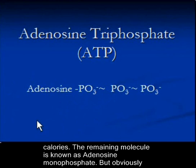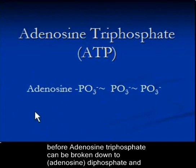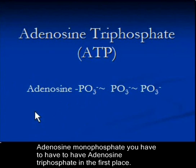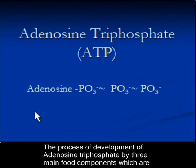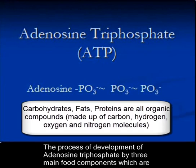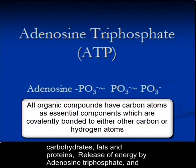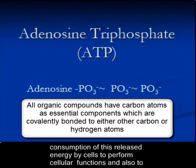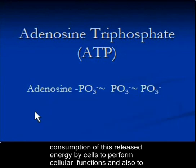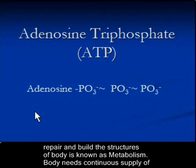Before adenosine triphosphate can be broken down to adenosine diphosphate and adenosine monophosphate, you have to have adenosine triphosphate in the first place. The process of development of adenosine triphosphate from the three main food components — carbohydrates, fats, and proteins — the release of energy by adenosine triphosphate, and the consumption of that energy by cells to perform cellular functions and to repair and build the structures of the body, is known as metabolism.